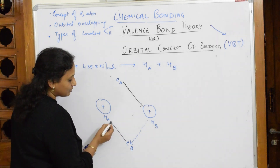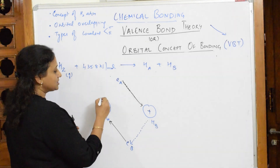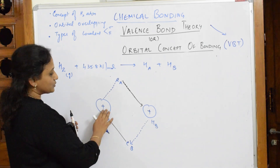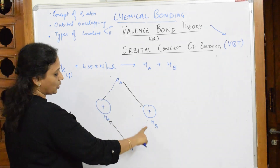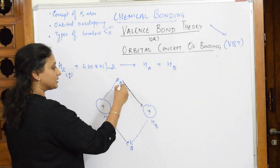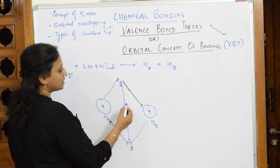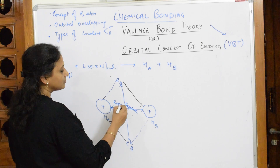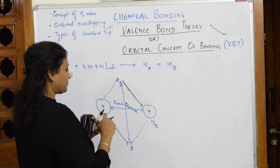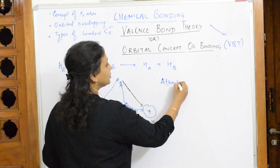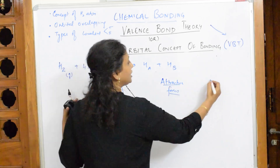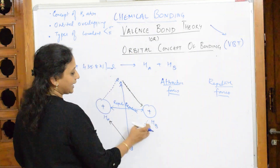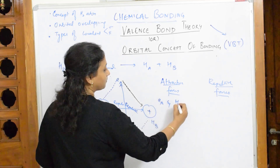You have new attractive forces formed between the two atoms, and old attractive forces already existing within each atom. Between Ea and Hb, and Eb and Ha — these are new attractive forces. The repulsive forces are between Ea and Eb (both electrons), and between Ha and Hb (both nuclei), because similar charges repel.